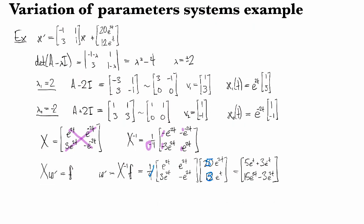So then u is the integral of X inverse times the forcing function. I integrate those coordinates and I get 5e to the t minus 3e to the negative t, and 3e to the 5t minus e to the 3t.